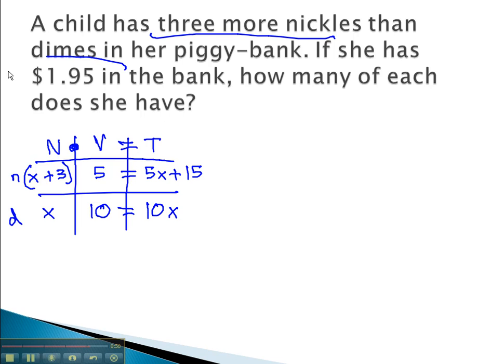We're also told that the total value is 195. In other words, when we add these together, in cents, we get 195. The last column, then, becomes our equation: 5x plus 15 plus 10x must equal 195.